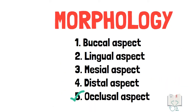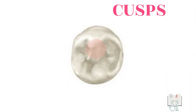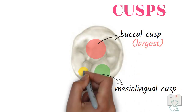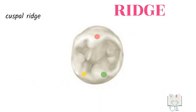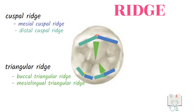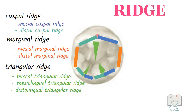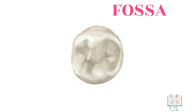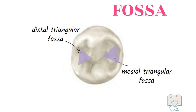Finally, the occlusal aspect. The outline form of the crown is square in shape. All three cusps are seen: the largest buccal cusp, then the mesolingual cusp, and the smallest distolingual cusp. Coming to the ridges, each cusp has two cuspal ridges — one mesial cuspal ridge and one distal cuspal ridge — and one triangular ridge running from the cusp tip towards the center of the crown. There are two marginal ridges: the mesial marginal ridge on the mesial border and the distal marginal ridge on the distal border. There are two fossae: the mesial triangular fossa adjacent to the mesial marginal ridge and the distal triangular fossa adjacent to the distal marginal ridge.